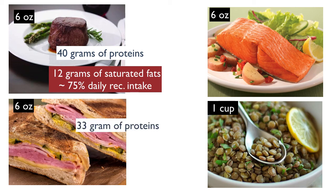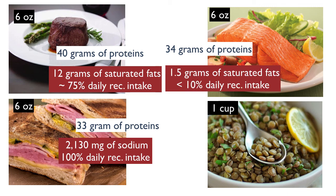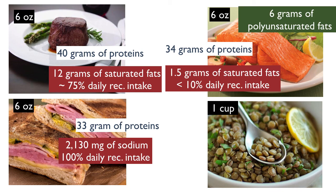A piece of ham has about 33 grams of protein, which is pretty good, but also comes with 2,130 milligrams of sodium — pretty much 100% of the daily recommended intake, making it a very high sodium protein source. Salmon has about 34 grams of protein, almost equivalent to the steak and ham, but comes with only about 1.5 grams of saturated fats — less than 10% of the daily recommended intake. It also has 6 grams of polyunsaturated fats, which are the healthy fats we want to increase in our diet.